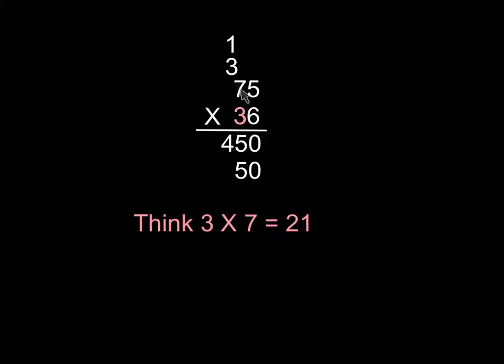Once you've written that down, then you can do three times seven, so think three times seven, what is that? Twenty-one.